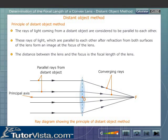These rays of light which are parallel to each other after refraction from both surfaces of the lens form an image at the focus of the lens. The distance between the lens and the focus is the focal length of the lens.